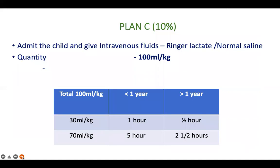For severe dehydration, give 100 ml per kg of IV fluid — preferably Ringer's lactate, because lactate acts as a source of bicarbonate lost during diarrhea. For infants, give 30 ml per kg over one hour followed by 70 ml per kg over five hours. For children over one year, give 30 ml per kg over half an hour followed by 70 ml per kg over two and a half hours — half the time used for infants.